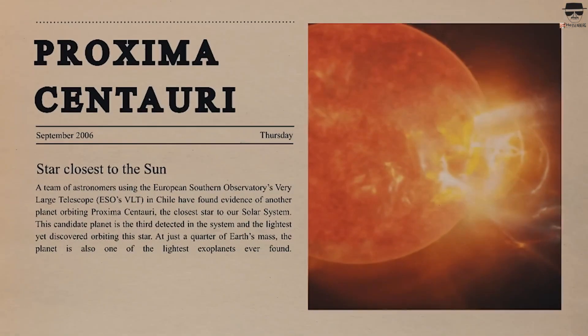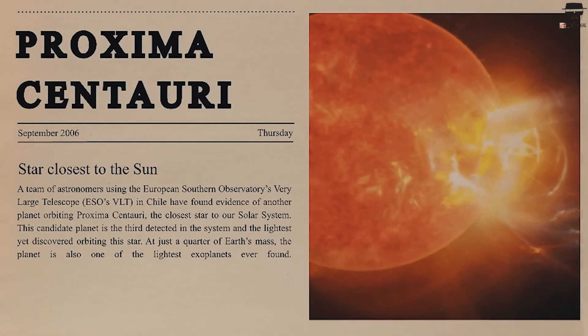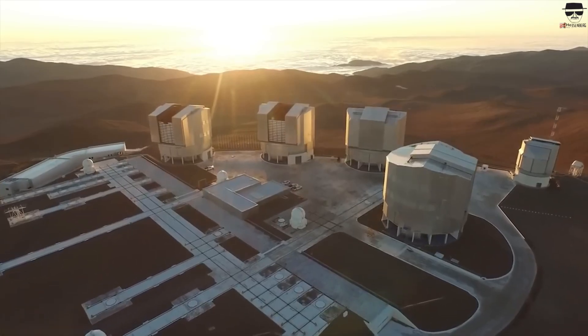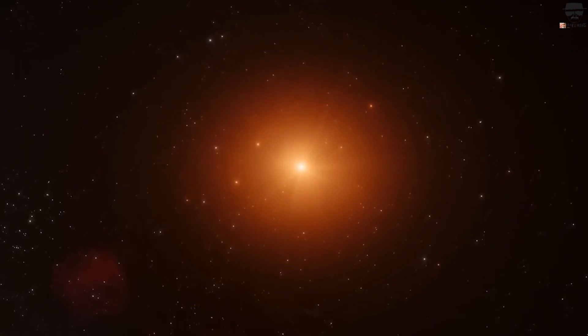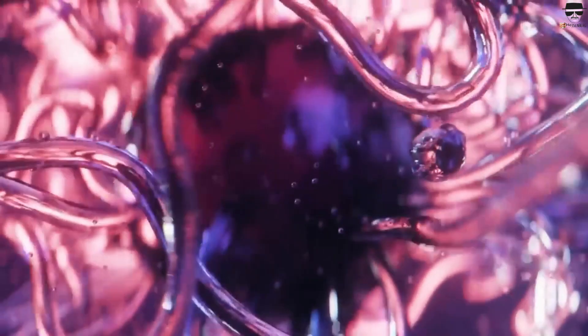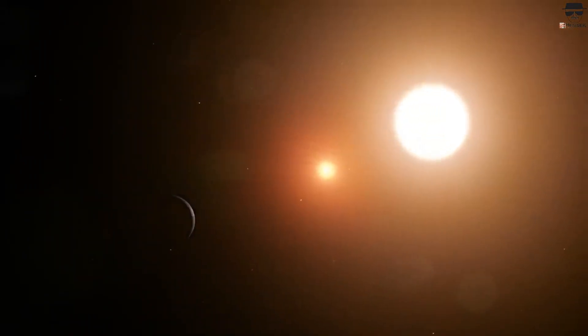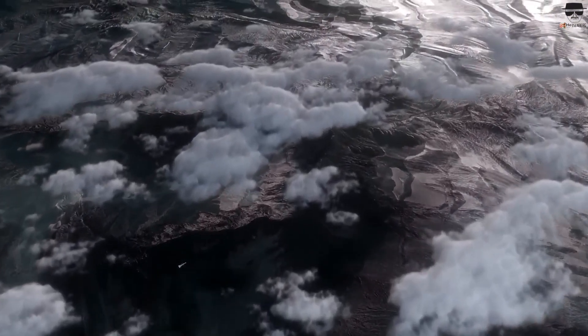Proxima Centauri, a red dwarf star that is 4.25 light years away from the sun and our closest star, offers us the best opportunity of observing city lights outside of the solar system. A planet must be 20 times closer to Proxima's furnace than the Earth is to the sun in order for it to support life based on liquid water, because this star is approximately 600 times fainter than the sun.